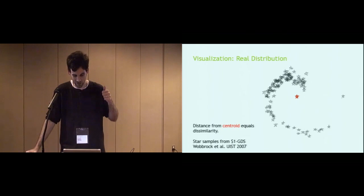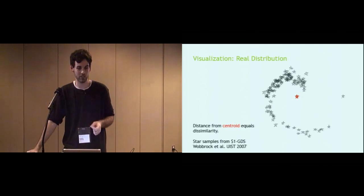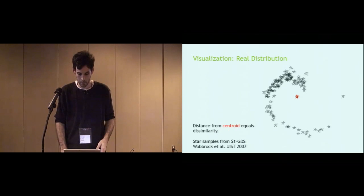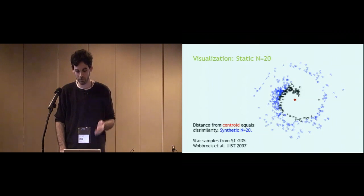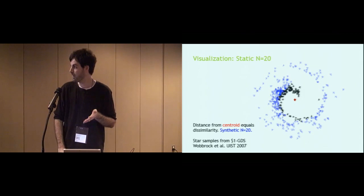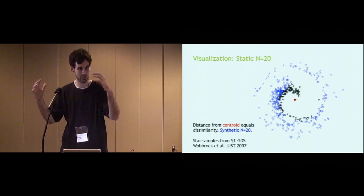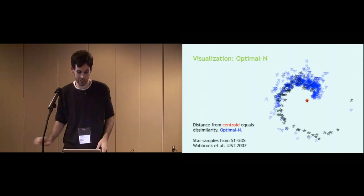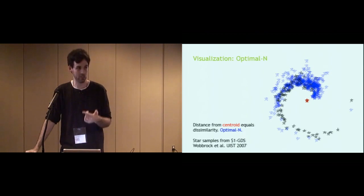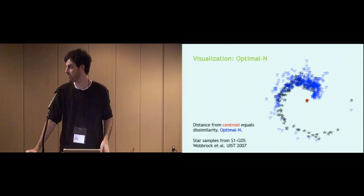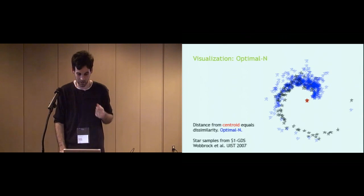But I prefer visualization, so here's the real distribution of the stars from the $1 gesture data set. The red in the center is the centroid, and the distance from the centroid is the measure of this similarity. If we want to create a synthetic distribution, we'll draw that in blue using N equals 20. We can see here this is a pretty poor result. The synthetic samples are really far away from the center, so we need to try to ring that in as much as possible. So, now if we reuse our optimal N equation, we can see we get a much closer result. It's not perfect, but it follows the real distribution much more closely. In the fringe elements that you see, they're still mostly recognizable as stars, and if you train a recognizer with them, you're still going to get pretty good results.